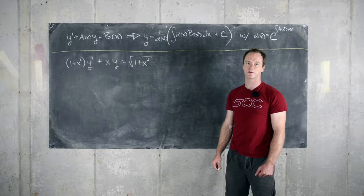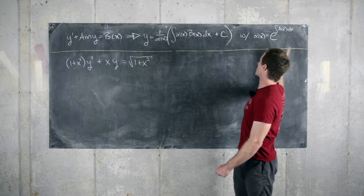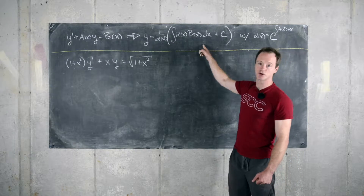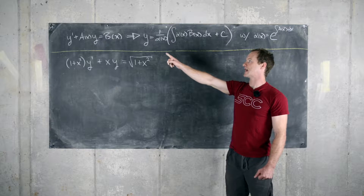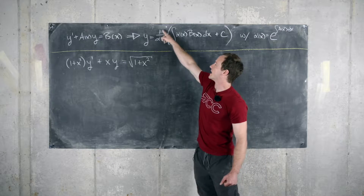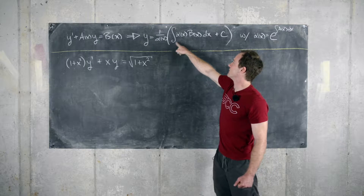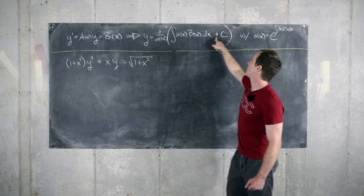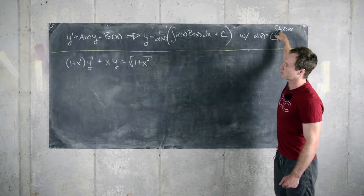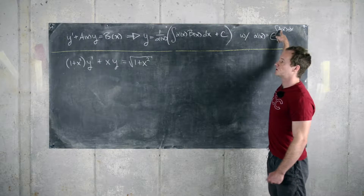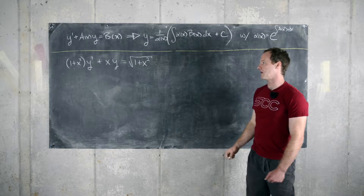Here we'll look at another example where we solve a first order linear differential equation. As a reminder, in a previous video we derived the general solution for a first order linear differential equation. So if we have y prime plus a times y equals b, we get y equals one over alpha times the quantity the antiderivative of alpha times b plus a constant c, where alpha of x is the exponential of our original function a. We need our original differential equation to be exactly in that form in order to apply this formula.